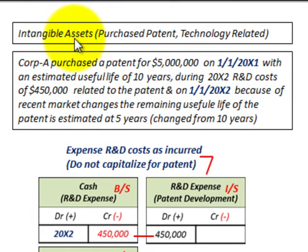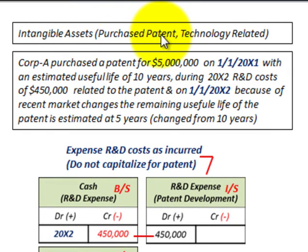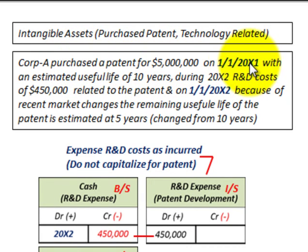We're going to be looking at intangible assets, specifically a purchased patent. A patent was purchased by a company and we'll look at how we'd account for that. This is technology-related. Corporation A purchased the patent for $5 million on 1-1-20x1 with an estimated useful life of 10 years.